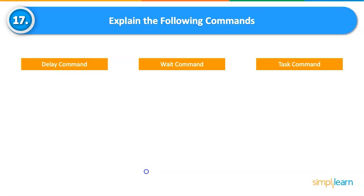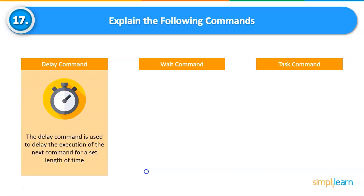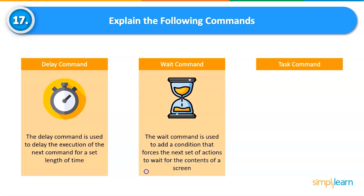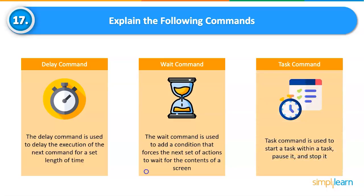Explain the Delay, Wait, and Task commands. The Delay command is used to delay the execution of the next command for a set length of time; you can specify the time in milliseconds or seconds. The Wait command adds a condition that forces the next set of actions to wait for the contents of a screen to change before proceeding. The Task command is used to start a task within a task, or to pause or stop it.